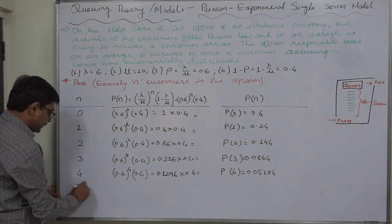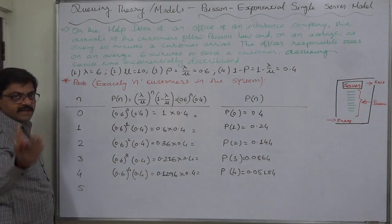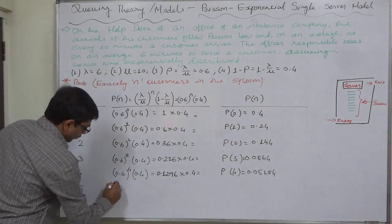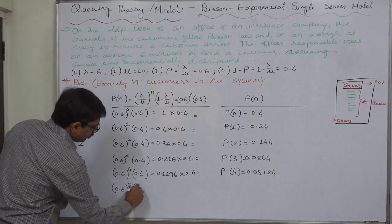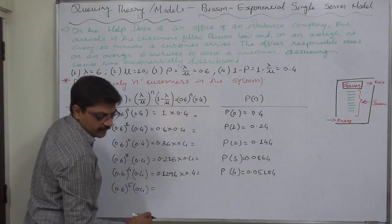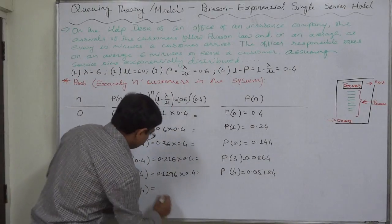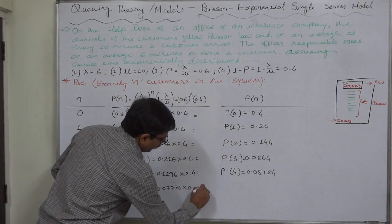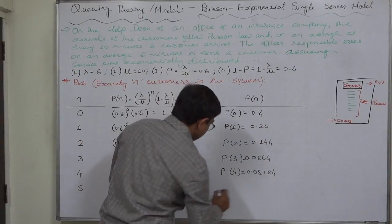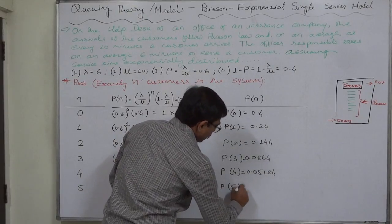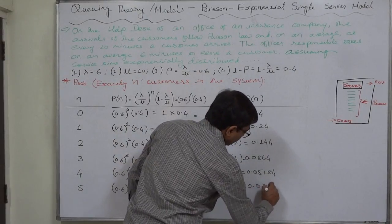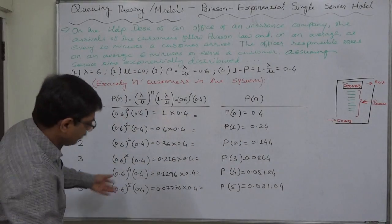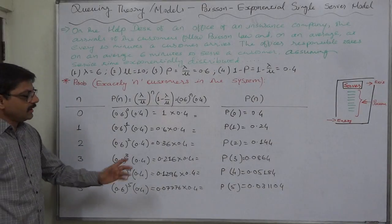Finally, suppose n takes the value 5. The probability of exactly five customers in the system is the utilization rate raised to 5, multiplied by the idle rate. That gives 0.07776 into 0.4, which equals 0.031104. And so on — you can take n as 6 and beyond.